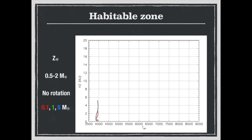This is an animation that I made to illustrate the impact of the mass on the habitable zone limit. This is the evolution of the habitable zone as a function of the effective temperatures for masses between 0.5 and 2 solar masses.